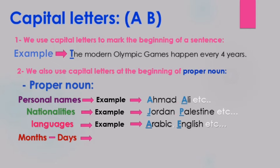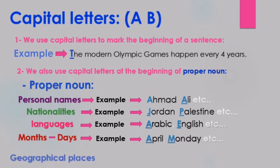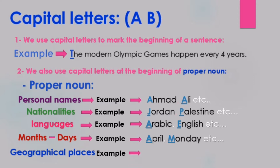Number four: months and days — مع الشهور والأيام — for example: April, Monday, etc. And with geographic places — مع الأماكن الجغرافية — for example: Izmir in Turkey, and California in the US.